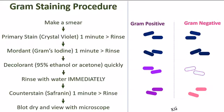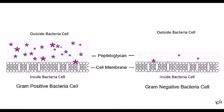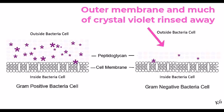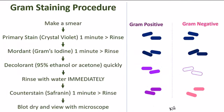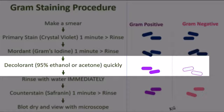Now let's step back and see what has happened to those bacteria. The ethanol on the gram-positive bacteria made that thick layer of peptidoglycan dehydrate and shrink, essentially sealing the crystal violet into the wall. On the other hand, the first thing the ethanol touched on the gram-negative bacteria was the lipid membrane. And since lipids are soluble in 95% ethanol, that membrane will just dissolve away, exposing that thin layer of peptidoglycan, which can't retain the crystal violet, so it's washed away too. This essentially leaves colorless cells, which you would not be able to see under the microscope.